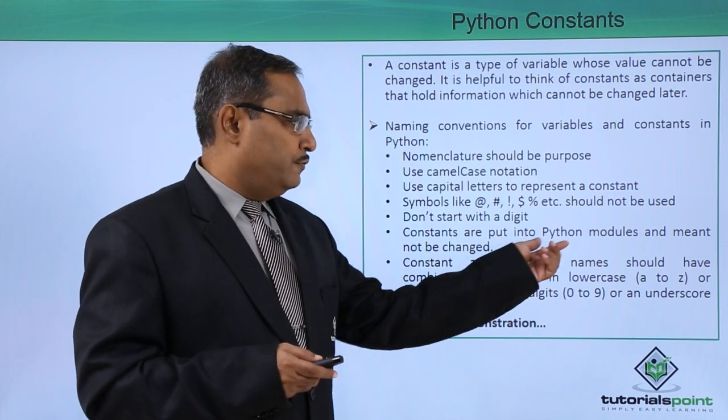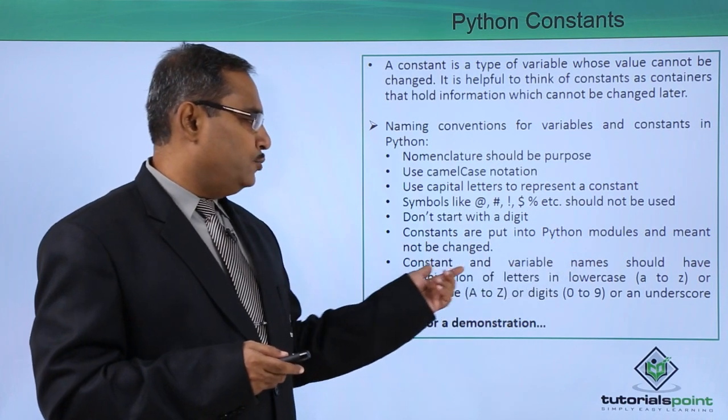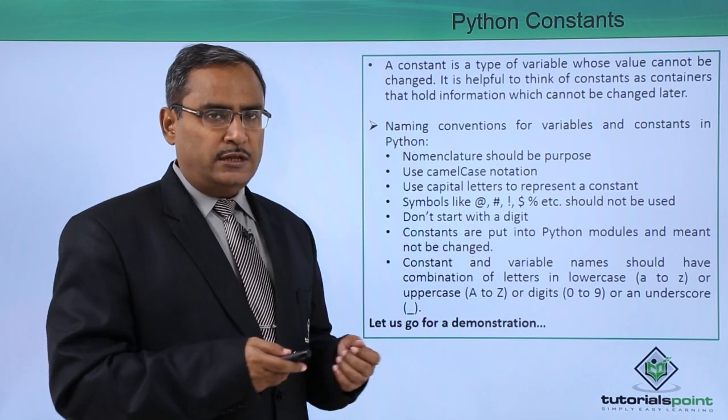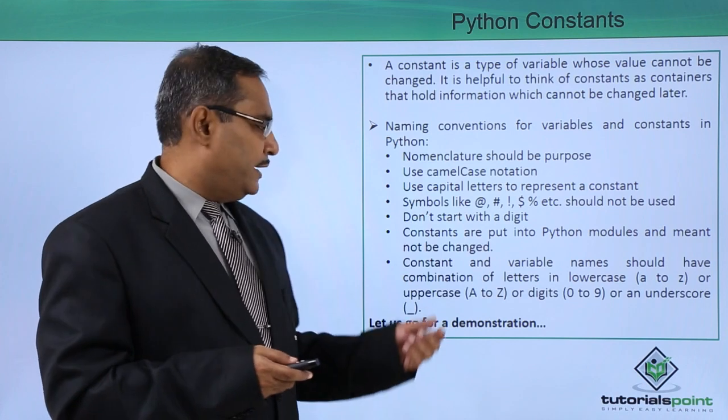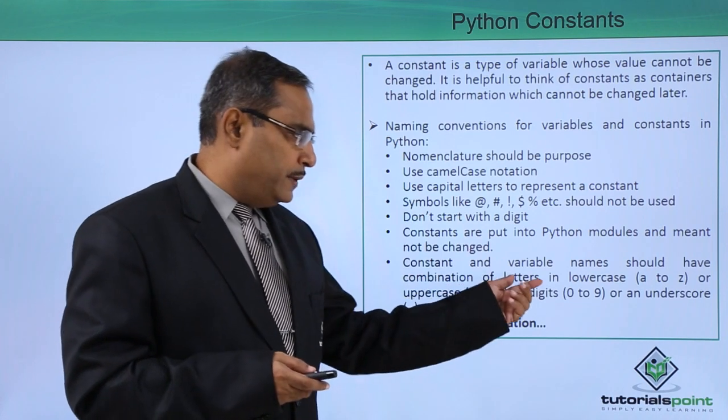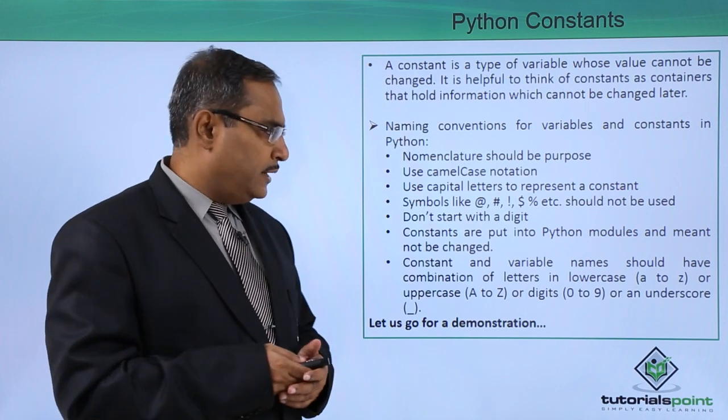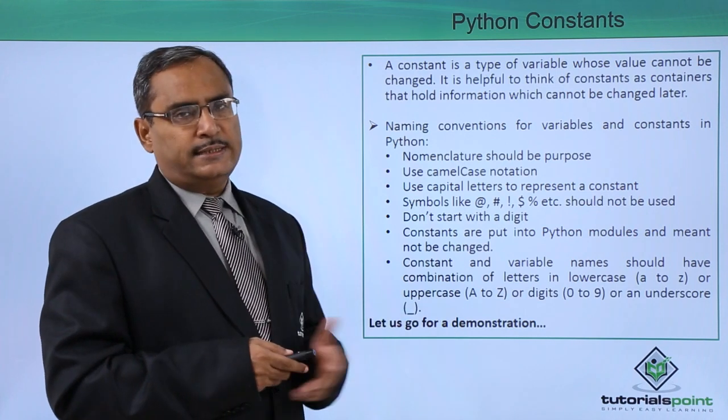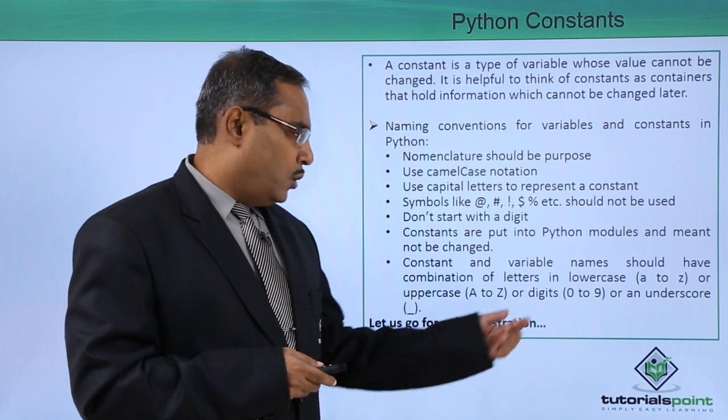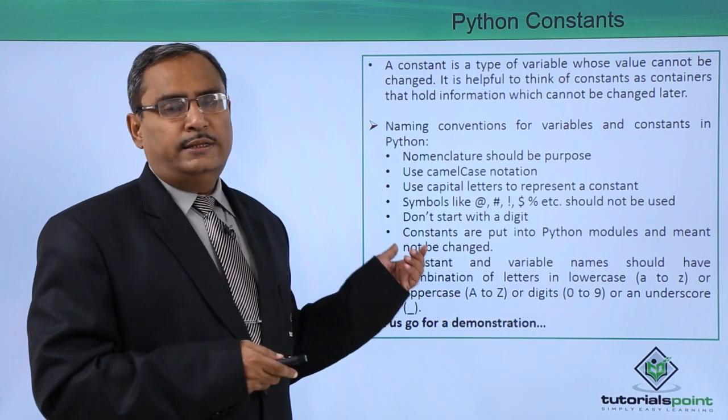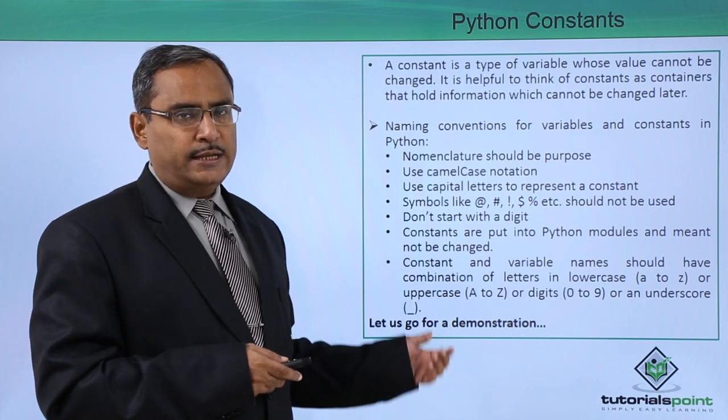Constants are put into Python modules and meant not to be changed. Constant and variable names should have the combination of letters in lowercase (a to z) or uppercase letters (A to Z) or digits (0 to 9) or an underscore. These are the valid characters in naming.